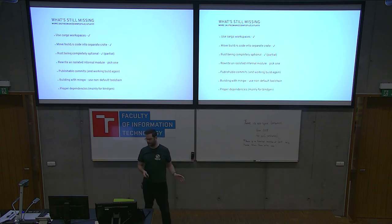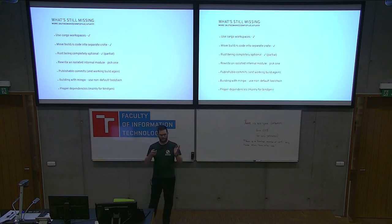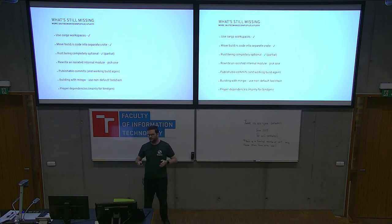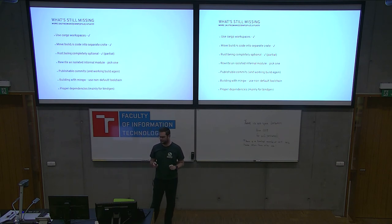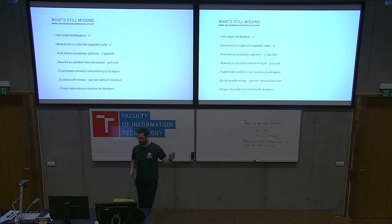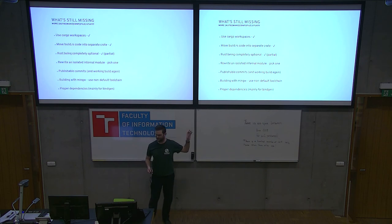From what I did, I have a list of things: I want to use workspaces for different things — that works. I have some stuff in a separate crate, whatever's used from build.rs. The rest is almost completely optional. That's good because you don't want to change the dependencies too drastically with a project this big. There are some things I still need to do that don't work properly yet, but we're on our way.